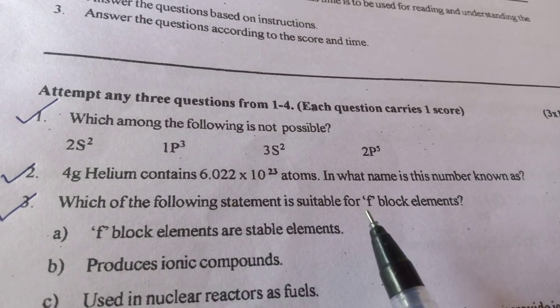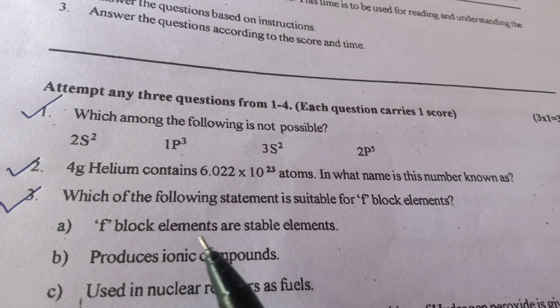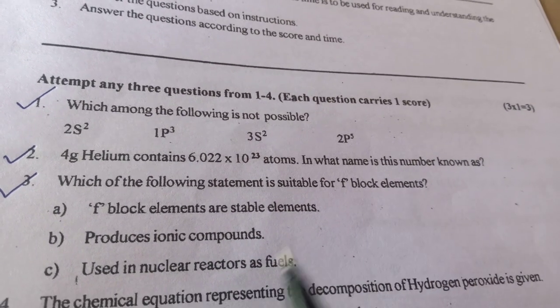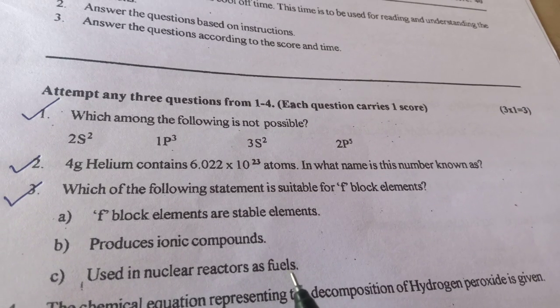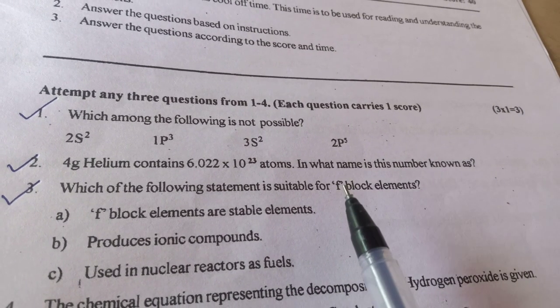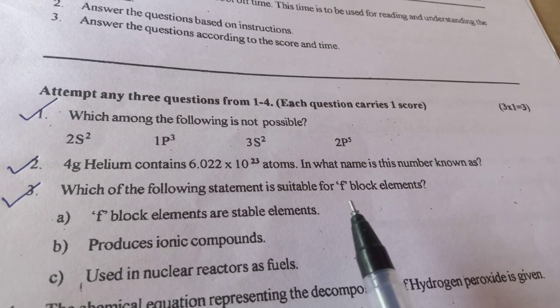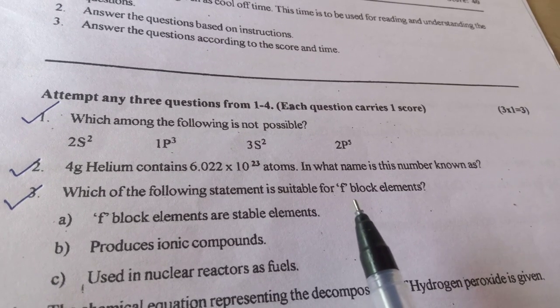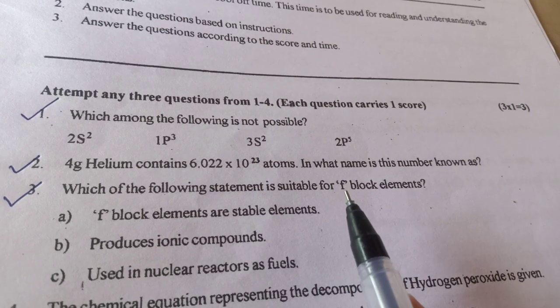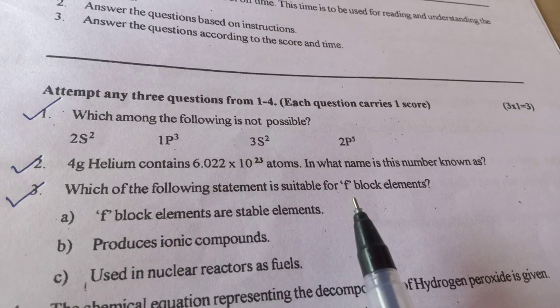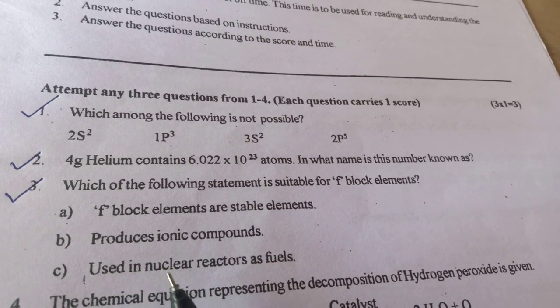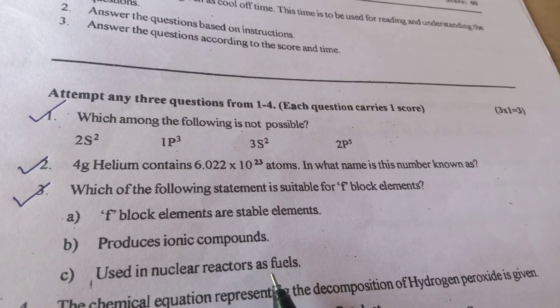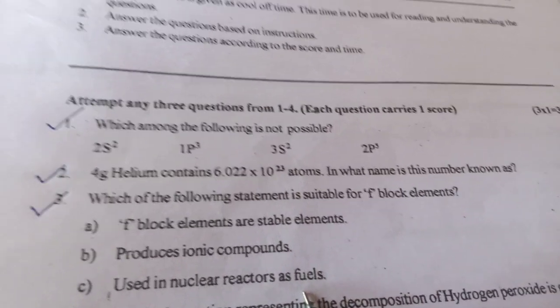Which of the following statement is suitable for F block elements? F block elements are stable elements, produces ionic compounds, used in nuclear reactors as fuels. We know F block elements are situated bottom of the periodic table. It is lanthanides and actinides. Some of these elements are used in nuclear reactors as fuels, that is the correct answer.